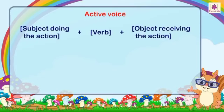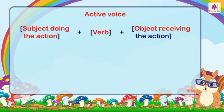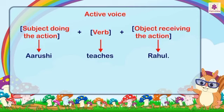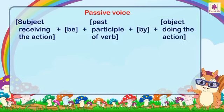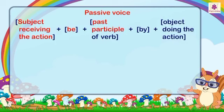A simple sentence in active voice has the following pattern: subject (doing the action) + verb + object (receiving the action). For example: Arushi teaches Rahul. A simple sentence in passive voice has the following pattern: subject (receiving the action) + be + past participle of verb.